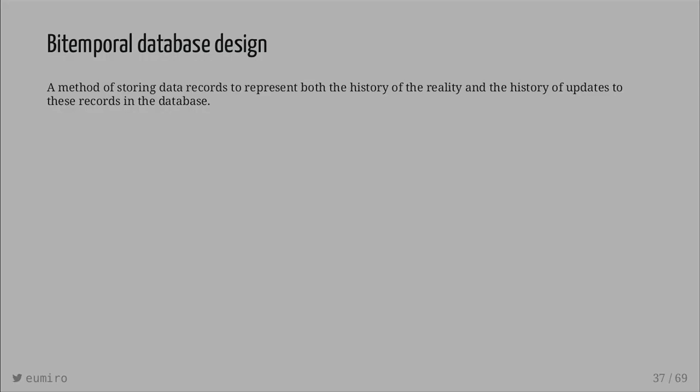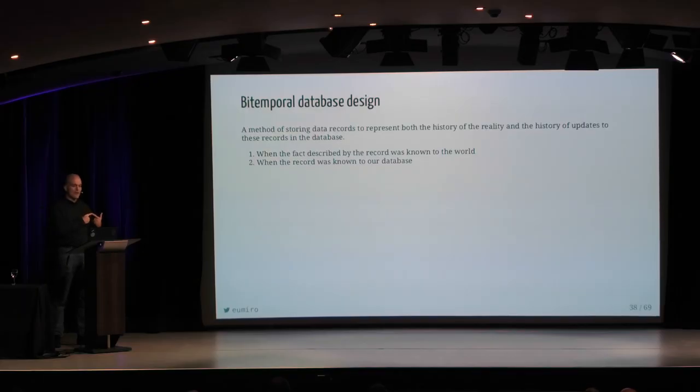Are there any questions? No? OK. Because now we are going to add another time dimension. It's a bi-temporal database design — a method of storing data records to represent both the history of the reality and the history of updates to these records in the database. The two temporal dimensions are: when the fact described by the record was known to the world, and when the record was known to our database. If I keep track of your home address and you tell me today that in January you moved to a new address, I can enter that you moved in January, but the information came to my database today in March, which allows me to say that during January and February I believed you still lived at the old address.